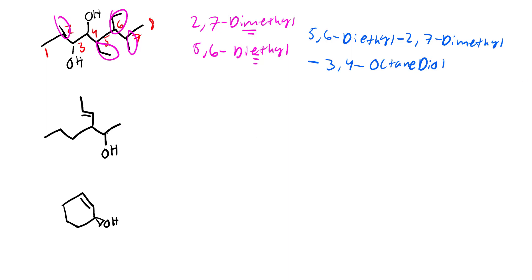Now we're jumping to a harder one. We start numbering from the alcohol. Going from the right: 1, 2. Now where do I go - up or to the left? Going up: 3, 4, 5, 6. Going left: 3, 4, 5, 6. Both give 6 carbons. But going upwards I get a double bond, and my double bond is pretty important - more important than a single bond. So I'm going to include it in my main chain. We have carbons 4, 5, and 6, so that must mean we have a 3-propyl substituent.